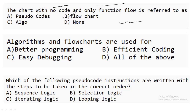The next question: algorithm and flowchart are used for — better programming, efficient coding, easy debugging, or all of the above? All of the above factors are considered when using algorithms and flowcharts, so 'all of them' is the correct answer.